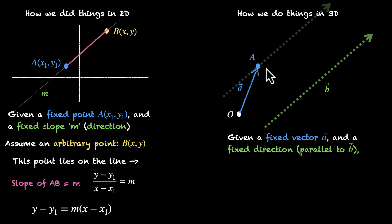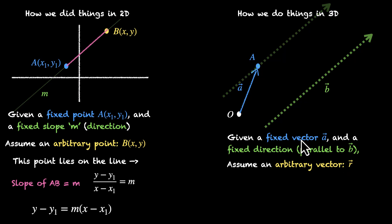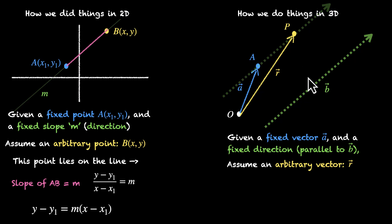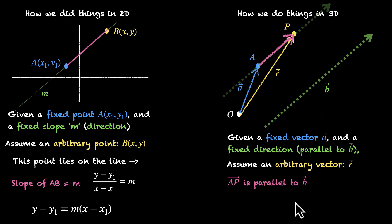Here we assumed an arbitrary point; in 3D we can assume an arbitrary vector. Let's call it R vector. So if this is a point P, and R vector is its position vector — if point P lies on the line, then vector AP has the same direction as vector B. These two vectors are collinear, meaning one is a scalar multiple of the other. So AP is parallel to B, which means AP equals Lambda times B.